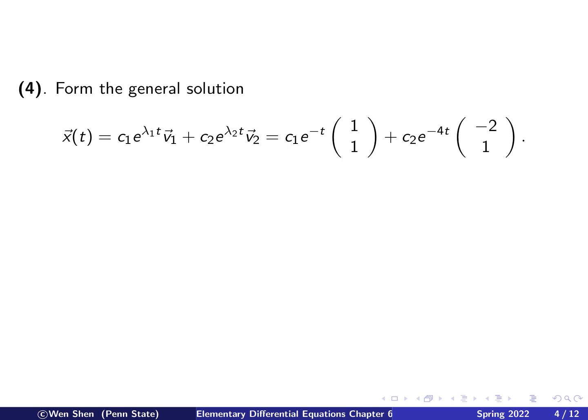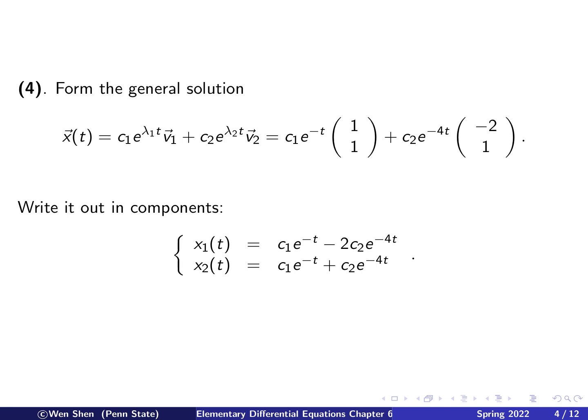With the eigenvalues and eigenvectors obtained, we can form the general solution. The general solution takes the standard form, with lambda 1 equals negative 1, lambda 2 equals negative 4, V1 equals [1, 1], and V2 equals [negative 2, 1]. Writing out in components: x1 equals C1 times e^(negative t) minus 2 C2 times e^(negative 4t), and x2 equals C1 times e^(negative t) plus C2 times e^(negative 4t).